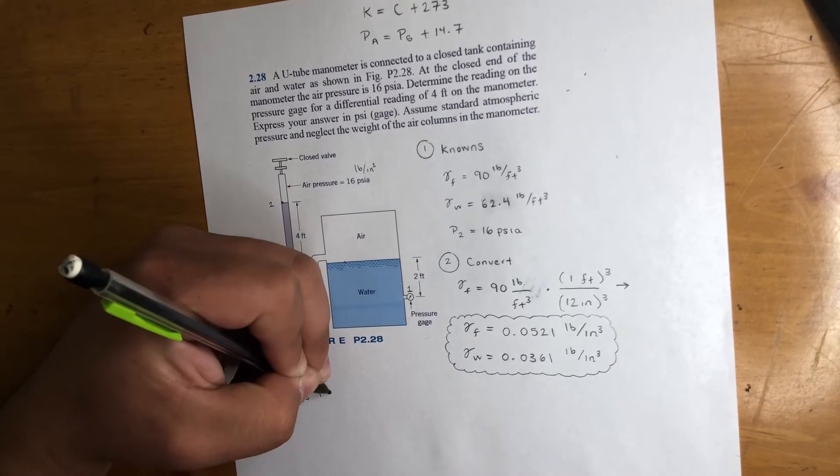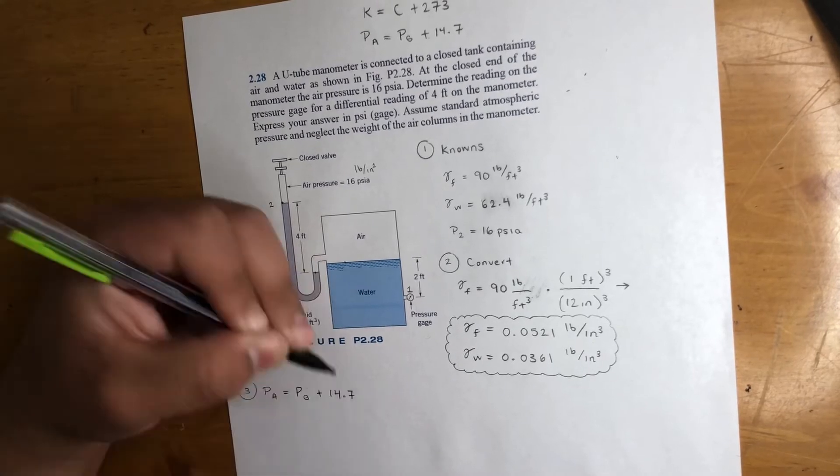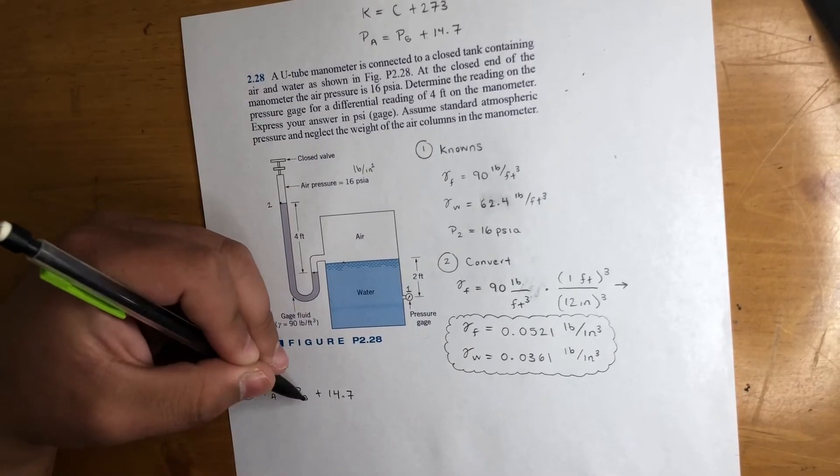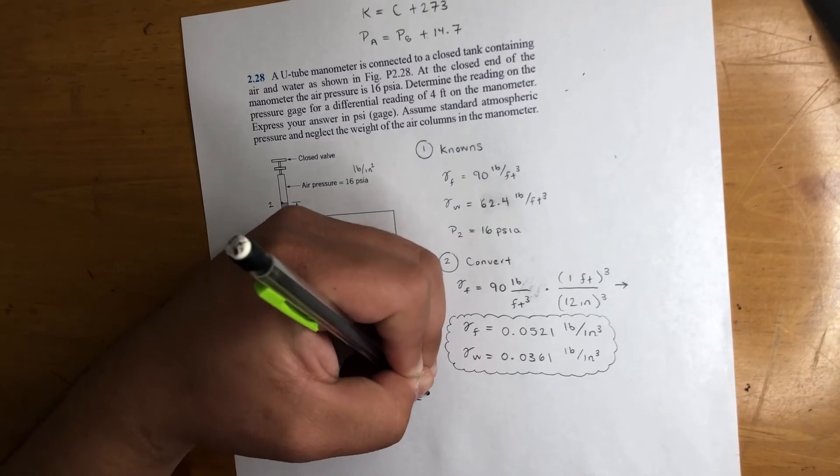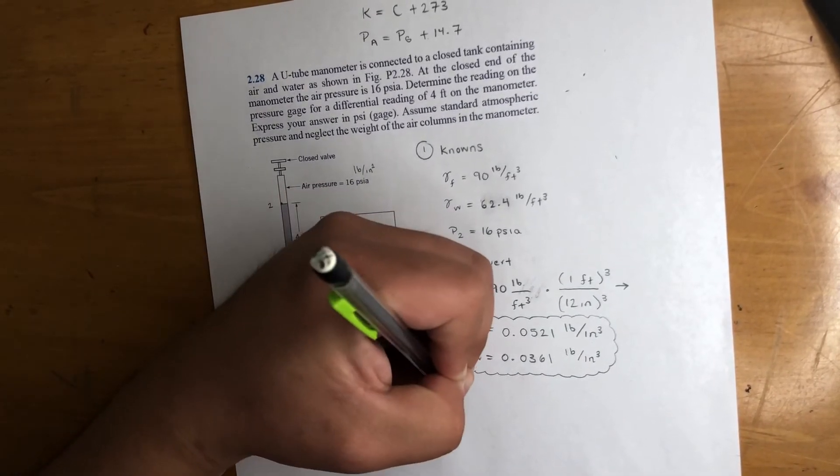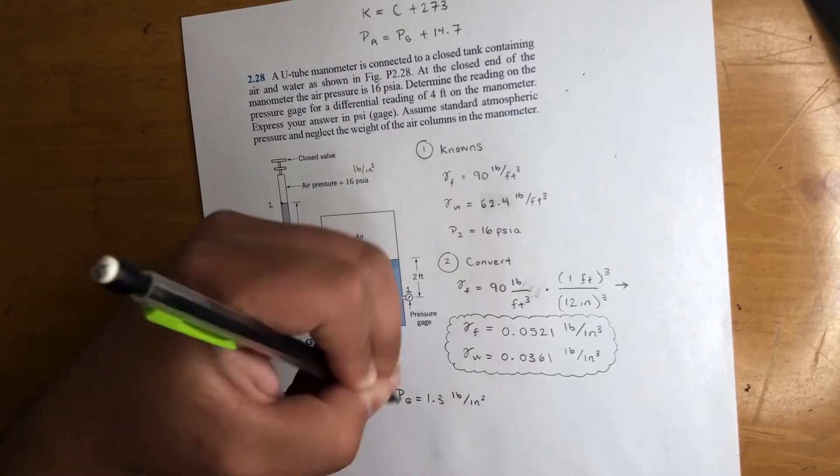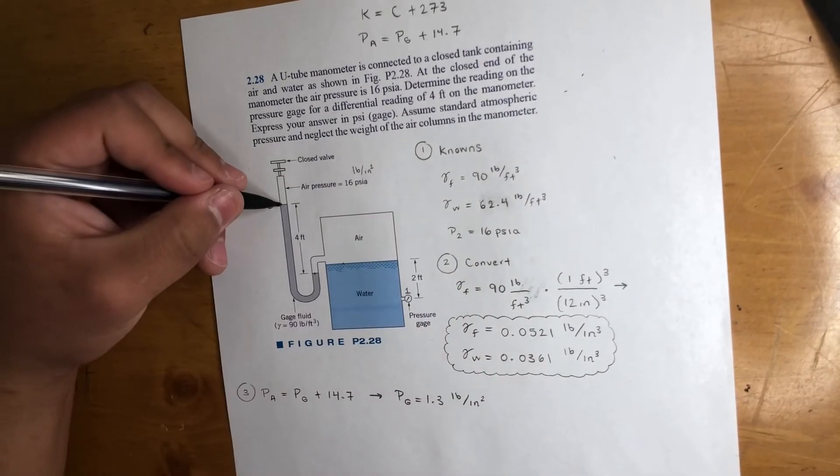So that means third step is the pressure we know. Our absolute—there's a formula, right? I'm just rewriting it what I did up top. This is 16 right here, so that means our pg is equal to 1.3 pounds per square inch, and this is gauge pressure. So that's the pressure right here, pretty much.